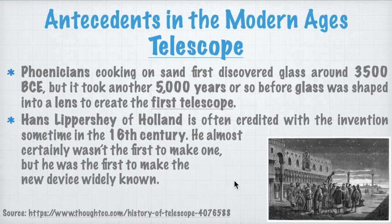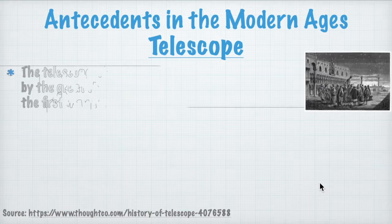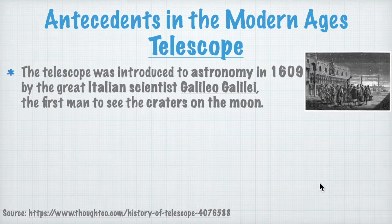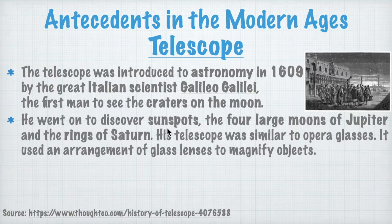The telescope was introduced to astronomy in 1609 by the Italian scientist Galileo Galilei, and he was the first man to see craters on the moon. He went on to discover sunspots — obviously on the sun — and the four large moons of Jupiter and the rings of Saturn.